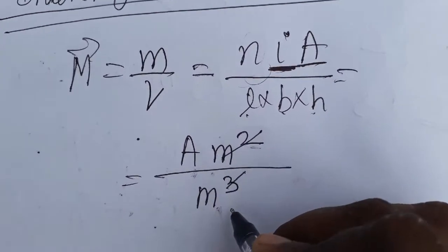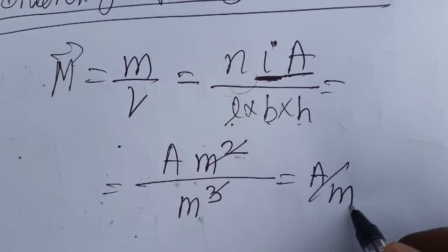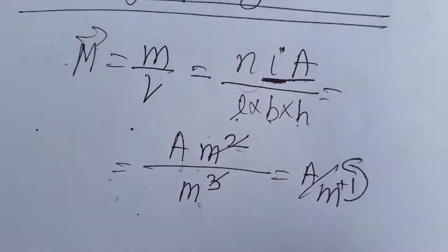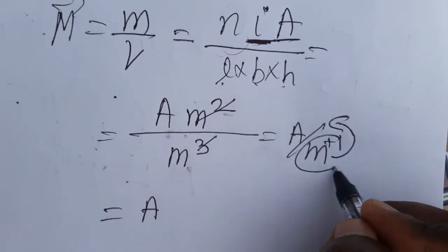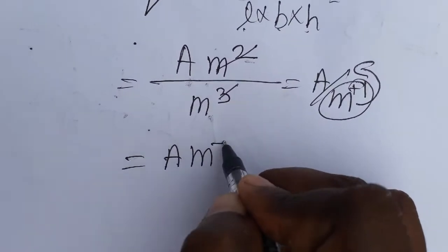So this is getting cancelled. We will get ampere divided by meter. From denominator I am taking meter as numerator, so plus 1 is going to change as minus 1. When you are bringing from denominator to numerator you should change the sign, so it is meter minus 1.